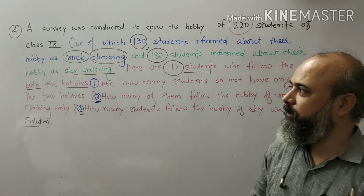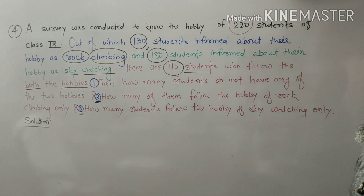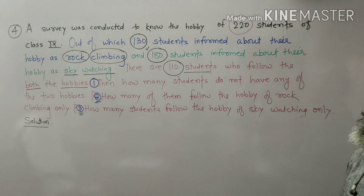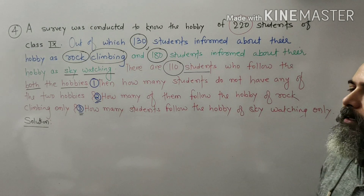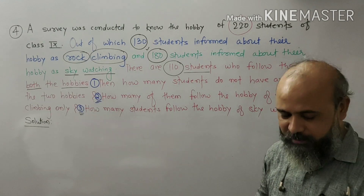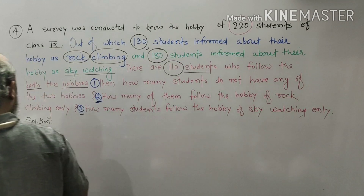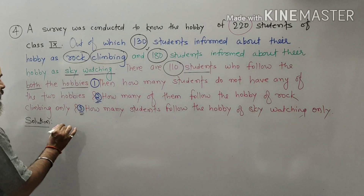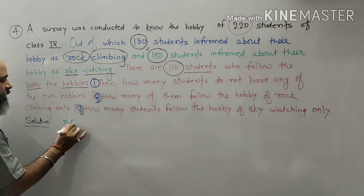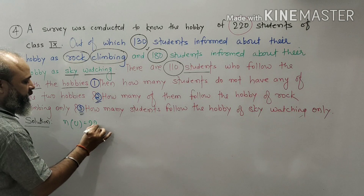Question No. 4: A survey was conducted to know the hobby of 220 students of class 9. There are 220 students in class 9. This will be the universal set, and the number of U will be 220.